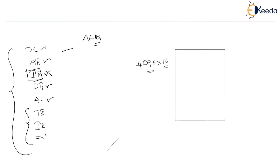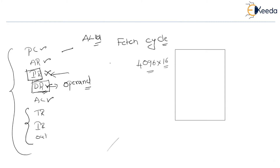If you don't use an instruction register, where is the instruction going to get stored? In the previous case, when an instruction is fetched, it will directly get transferred to the instruction register. Now we don't have an instruction register. The question is where the fetched instruction is going to get stored. We do have a data register. The data register's purpose is to hold the operand, but here we will use the data register as an instruction register in the initial phase of the instruction cycle. Till the fetch cycle ends, this data register works as an instruction register.